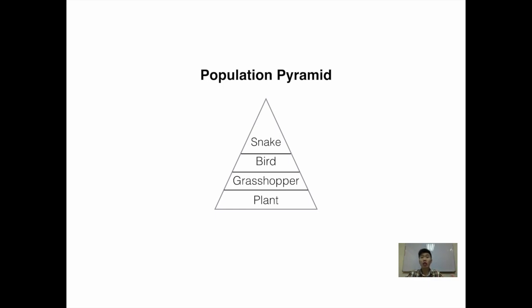I like to emphasize that the grasshopper cannot be a predator of the plant because the plant is a food producer, so we say that the grasshopper is a food consumer. Subsequently, we can say that the bird is a predator of the grasshopper, the grasshopper is a prey of the bird, or the bird preys on the grasshopper. The snake is a predator of the bird, the bird is a prey of the snake, and the snake preys on the bird.